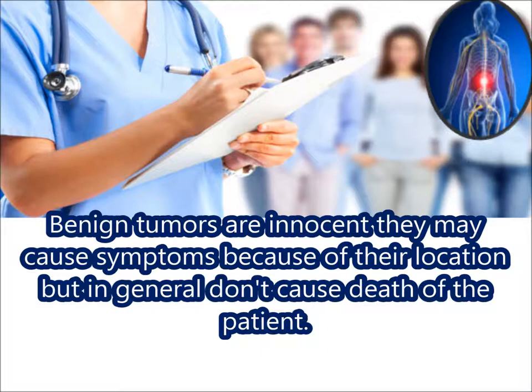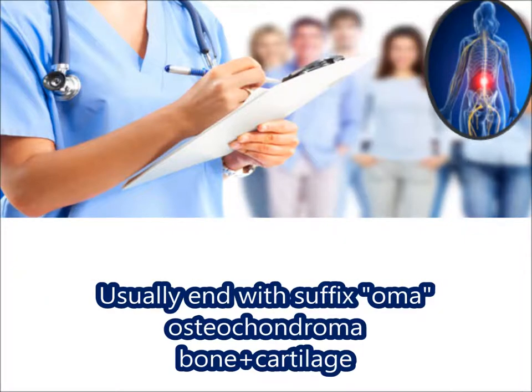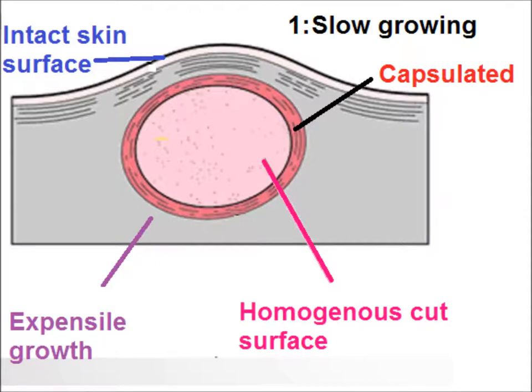Benign tumors are slow growing and they end with the suffix '-oma', like osteochondroma — a benign tumor composed of bone and cartilage. They are slow growing, so they have a capsule. They are well circumscribed, their overlying skin is intact, their cut surface is homogeneous, and they are expansile in nature.